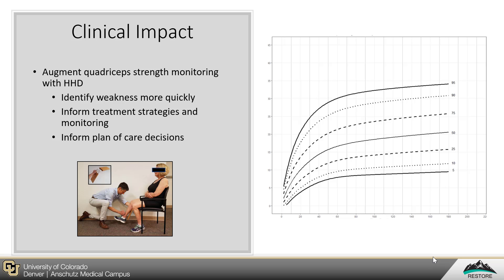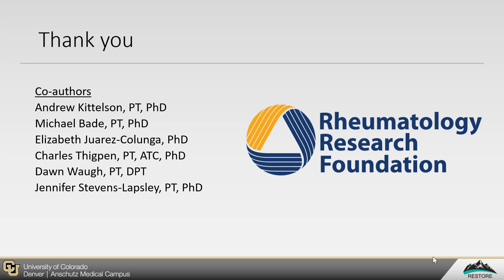We believe these charts may augment clinical monitoring of post-TKA quadricep strength by allowing clinicians to identify patients with quadriceps weakness beyond what is expected, inform treatment strategies and subsequently monitor patients' response to treatment over time, and inform plan of care decisions such as care frequency and duration and goal setting. I want to thank my mentors and co-authors in this project and the Rheumatology Research Foundation for their support.